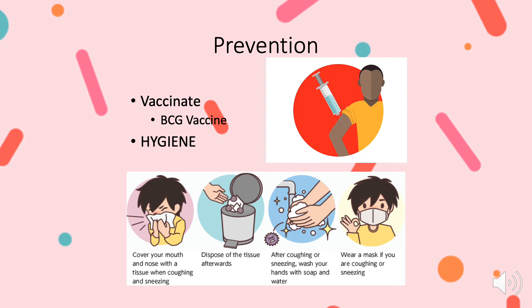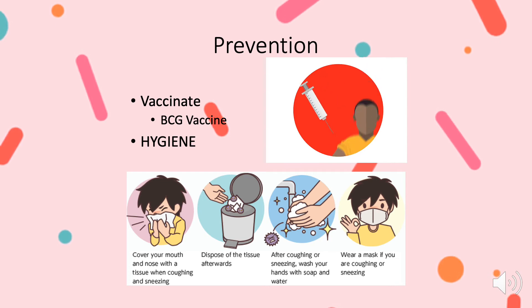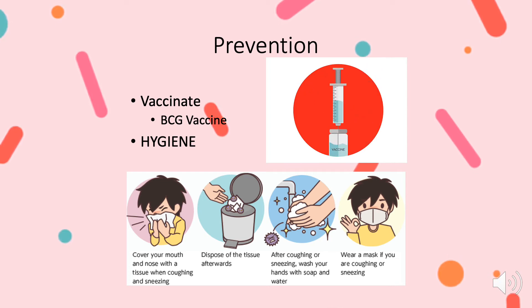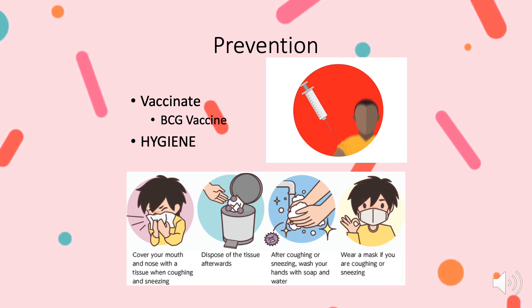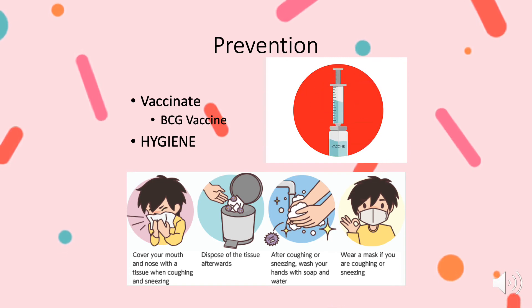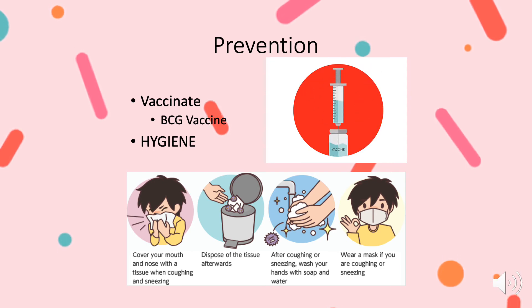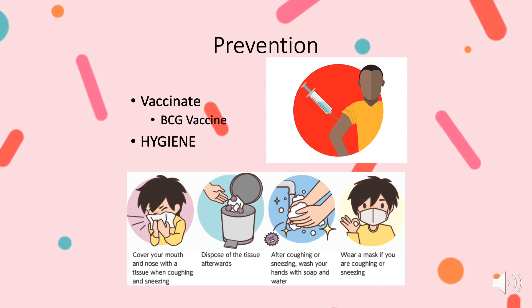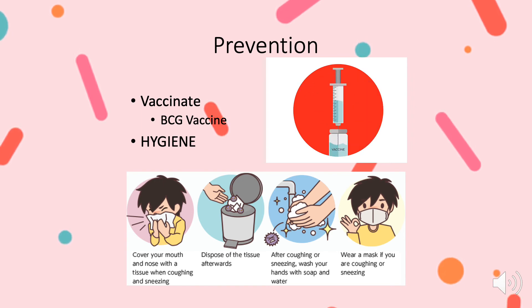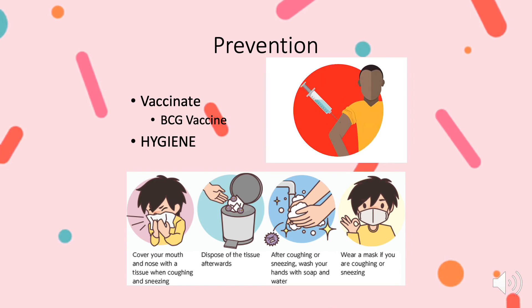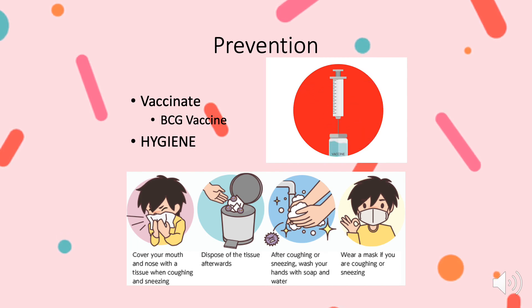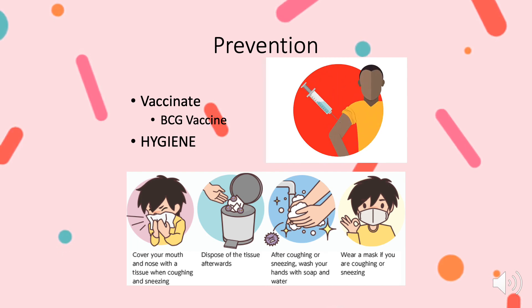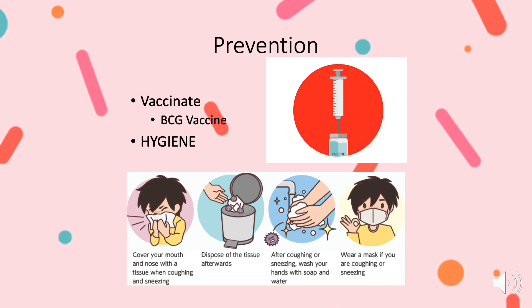A vaccine currently exists to prevent TB, known as the Bacillus Calmette-Guérin, or BCG, vaccine. In countries outside of the United States, the vaccine is given to infants and small children where TB is common. In the United States, the BCG vaccine should only be considered for some, not all people — healthcare workers, for example, should be considered since they could possibly be working with those infected with TB. As with most infectious diseases, good hygiene should always be implemented to prevent transmission. Washing your hands and covering your nose and mouth when you cough and sneeze can make a big difference.